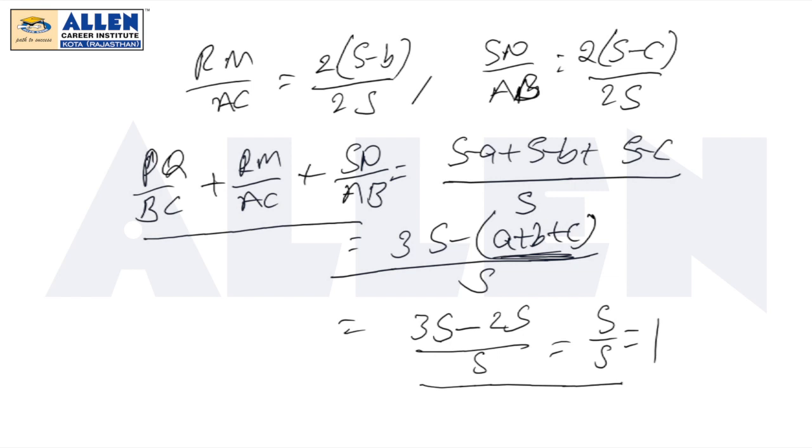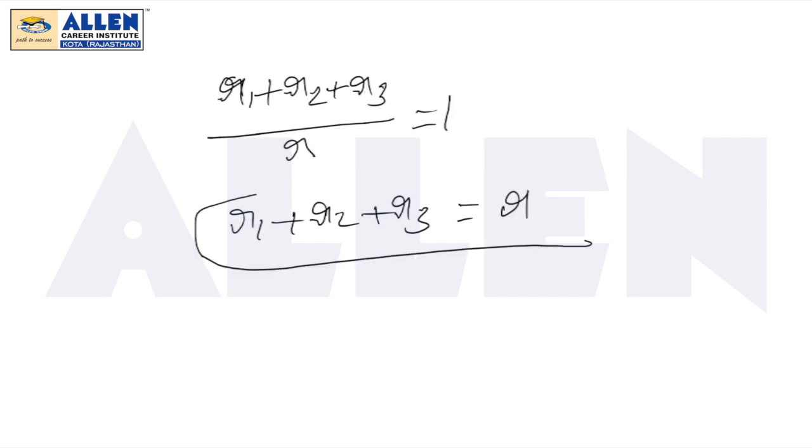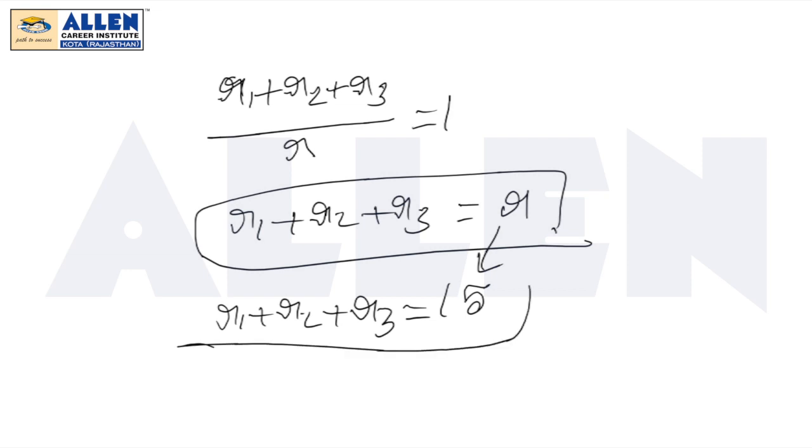We know this ratio equals R1 plus R2 plus R3 by R equals 1. Therefore, R1 plus R2 plus R3 should equal R. We already got R as 15. Therefore, R1 plus R2 plus R3 equals 15. This is your answer.